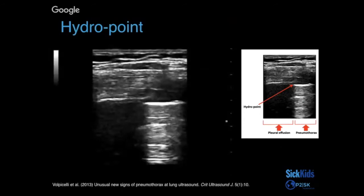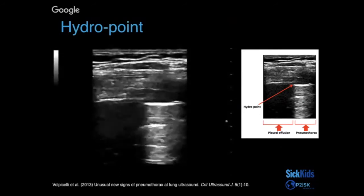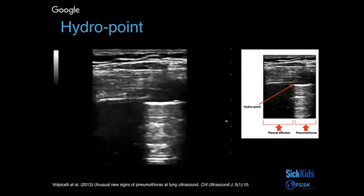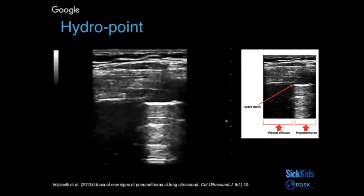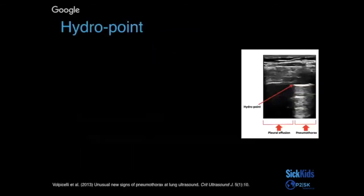You can also see this hydro point when there is pneumothorax alongside a pleural effusion. For example, in a hemo-pneumothorax patient, you could have this pleural effusion appearance on one side and pneumothorax on the other with absent lung sliding.